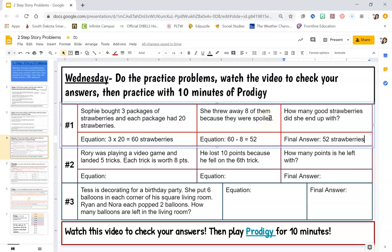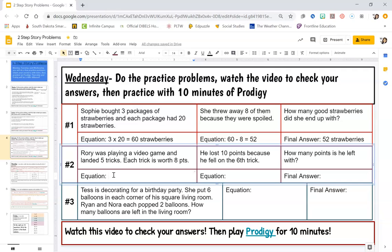All right, let's check number two. Rory was playing a video game and landed five tricks. Each trick is worth eight points. So five tricks times eight points each is going to give me 40 points.